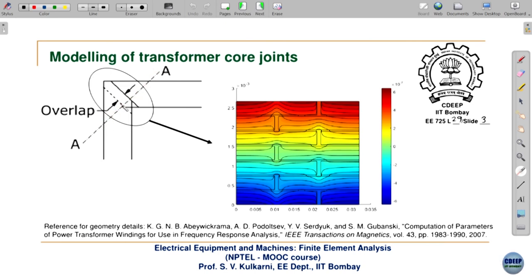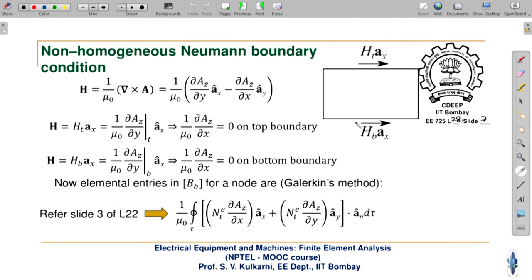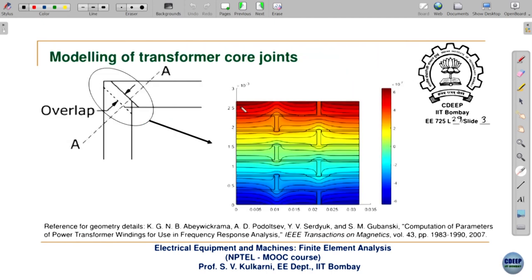The air gap here is alternating — it does not appear at the same place in successive layers. If the gaps appeared at the same position, the whole structure would be mechanically weak. So there is an interleaved joint design where the air gaps appear at different positions, making the entire joint mechanically stable. The geometry details are taken from the referenced paper.